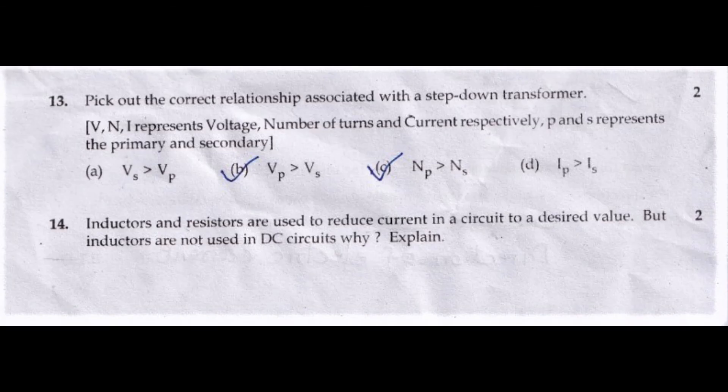Thirteenth question: Pick out the correct relationship associated with a step-down transformer. Answer: Voltage in primary is greater than voltage in secondary. Number of turns in primary is also greater than number of turns in secondary.